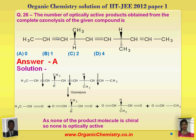The third question is: the number of optically active products obtained from the complete ozonolysis of the given compound is. In ozonolysis, all the multiple bonds are broken and corresponding aldehydes or ketones are formed. Here these pi bonds are broken and the corresponding aldehydes are obtained. These all do not have any chiral center, so none of the compounds are optically active in nature.